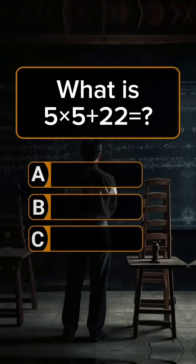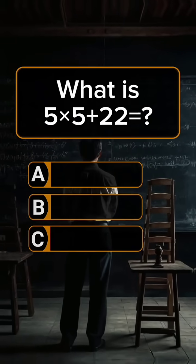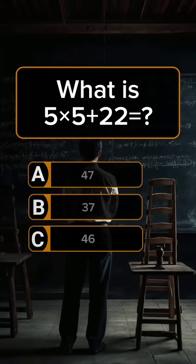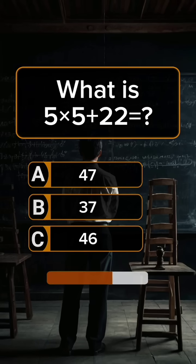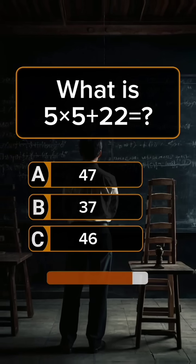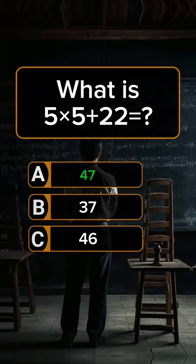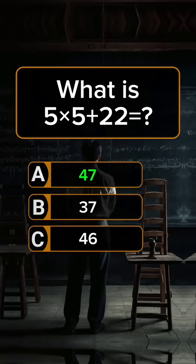Question 6. What is 5 times 5 plus 22? Answer A: 47.